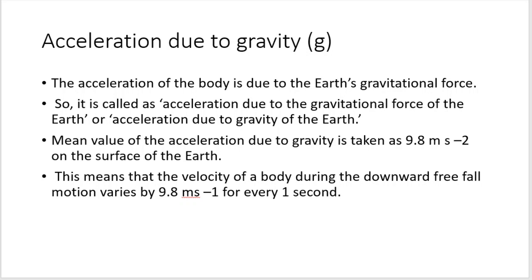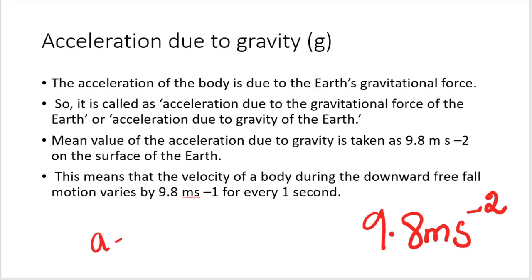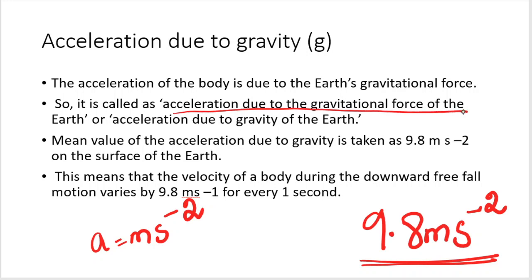That acceleration due to gravity is called g. The g value is 9.8 m/s². This is a constant value. Acceleration due to gravitational force of the earth — this means the velocity of the body increases by 9.8 m/s every second during free fall motion.